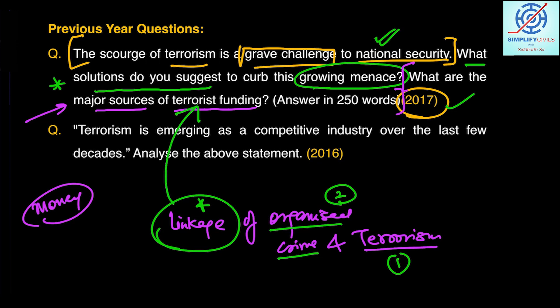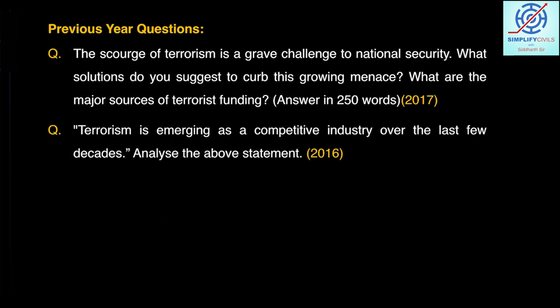This relates to a syllabus topic: the linkage of organized crime and terrorism. While preparing internal security, ensure you cover all aspects, as these topics are interrelated. The 2016 question was very unique — students were somewhat puzzled by how to answer it.